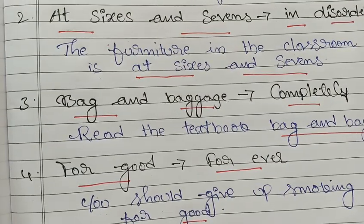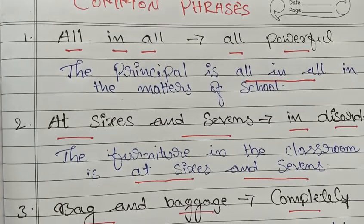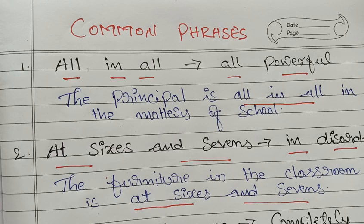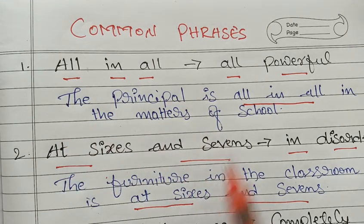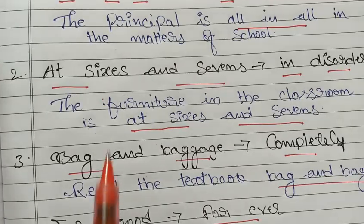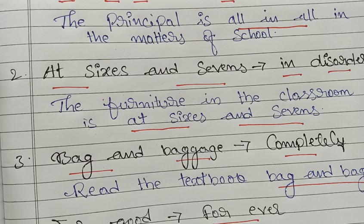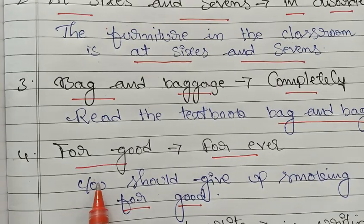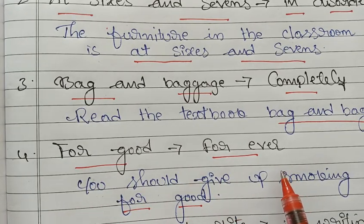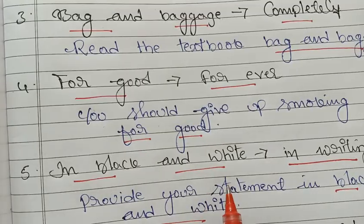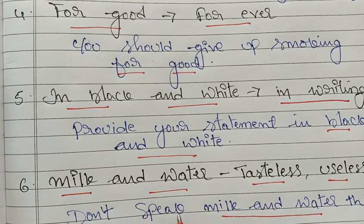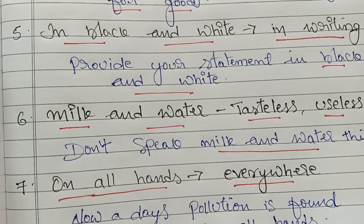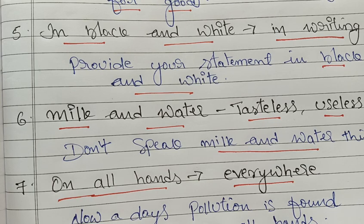That's all for today. We have learned seven important common phrases. Try to learn all of these and put them into practice in speaking and writing with your friends. First: 'all in all' — all powerful. Second: 'at sixes and sevens' — in disorder. Third: 'bag and baggage' — completely. Fourth: 'for good' — forever. Fifth: 'in black and white' — in writing. Sixth: 'milk and water' — tasteless or useless. Seventh: 'on all hands' — everywhere. Thank you very much, dear friends. Stay tuned for the upcoming class. Bye everyone!